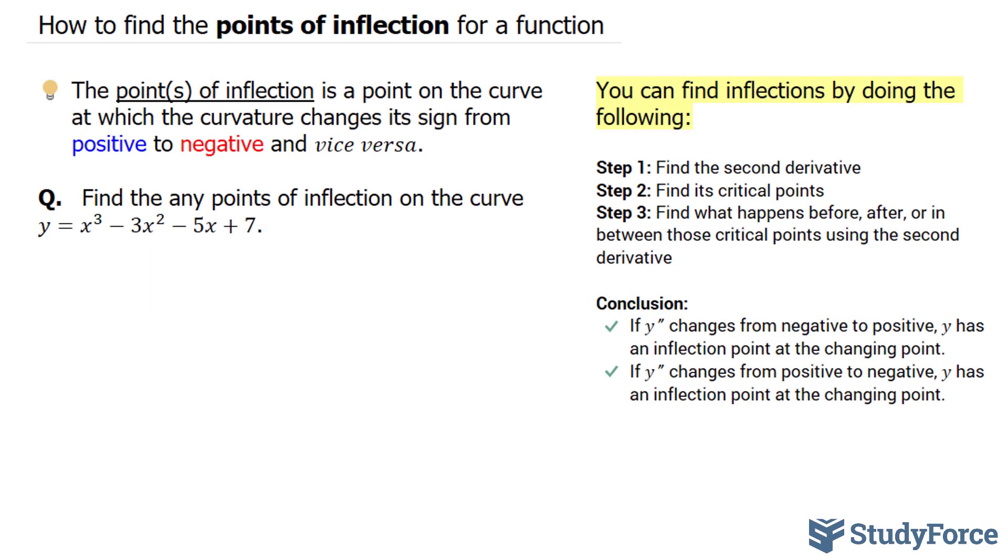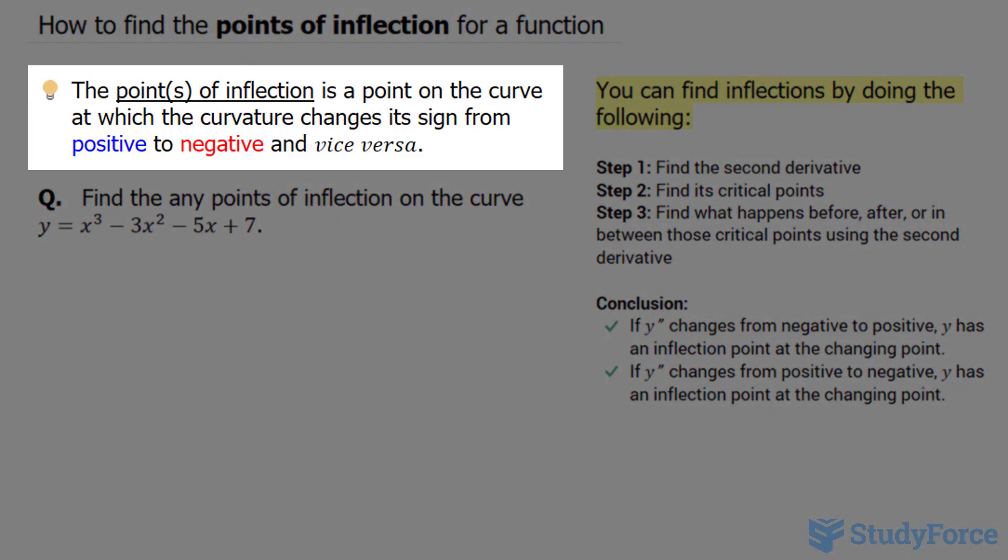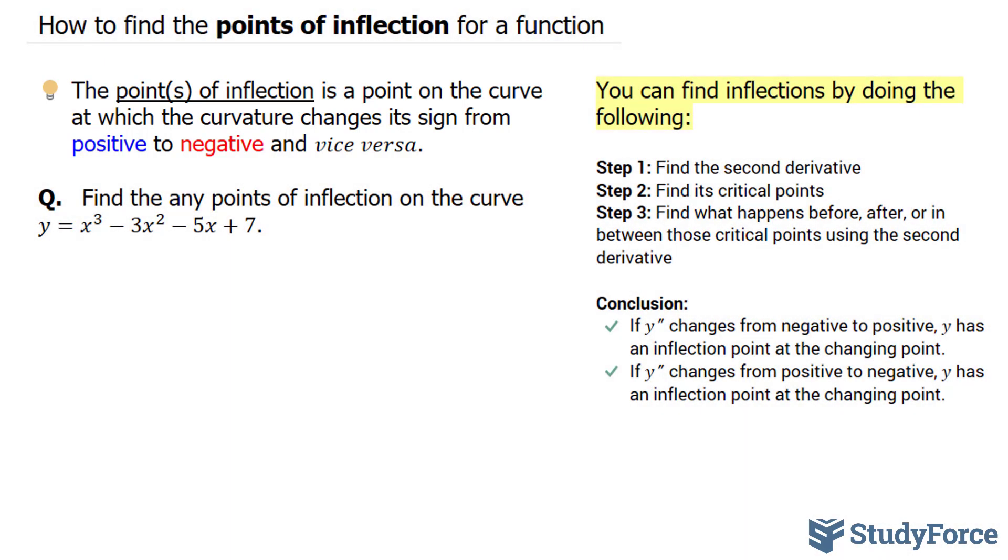In this video, I'll show you how to find the points of inflection for a function. The point of inflection is a point on the curve at which the curvature changes its sign from positive to negative and vice versa. In other words, it is the point at which the curve of the function goes from being concave up to concave down or the opposite way around.